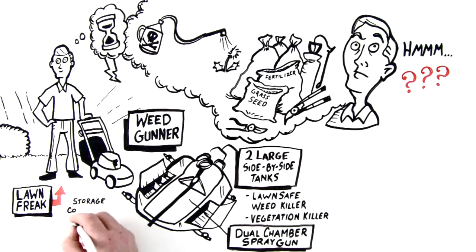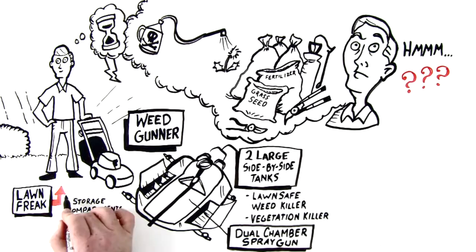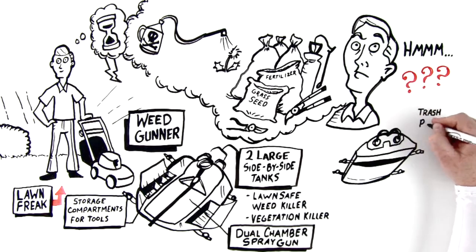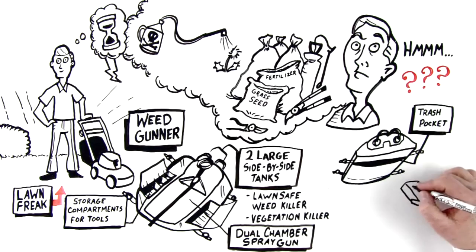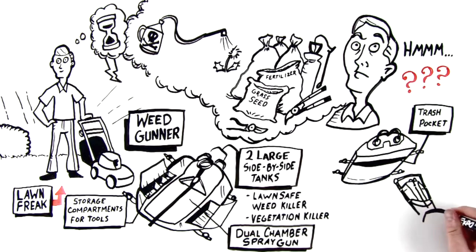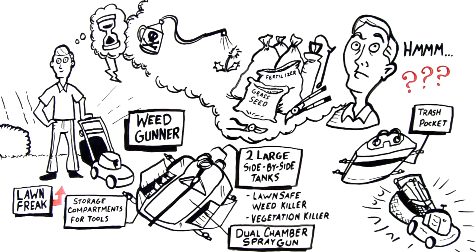More great features include versatile storage compartments for tools and even a separate trash pocket. Weed Gunner conveniently mounts on the push rails of Dave's lawnmower. It fits like a glove and looks cool too.